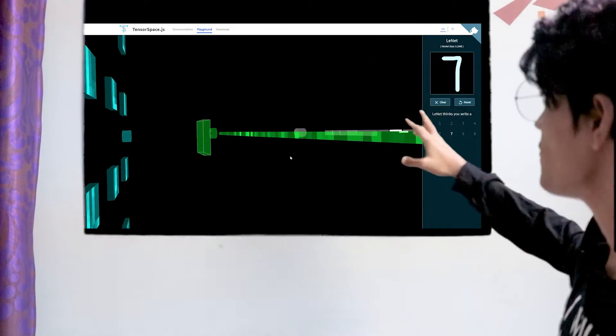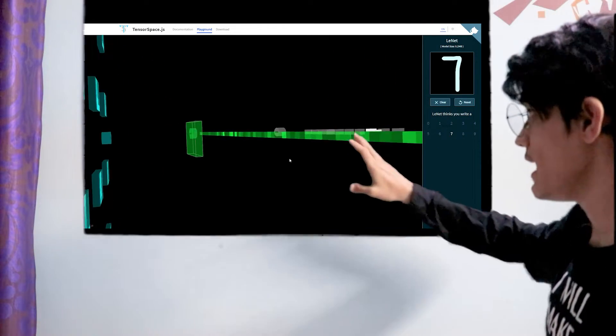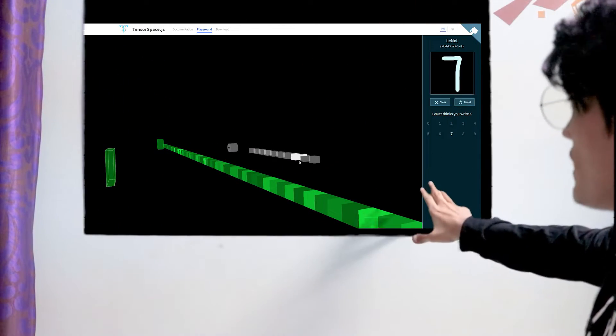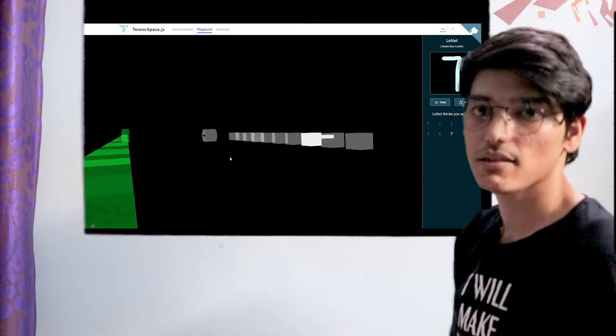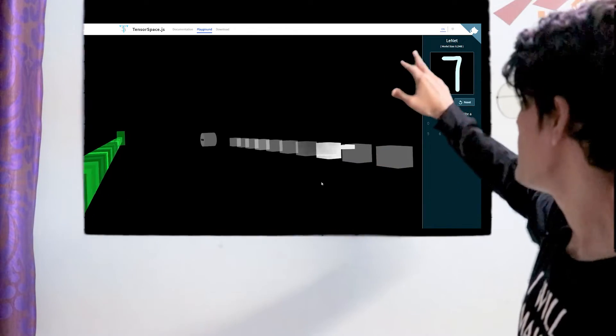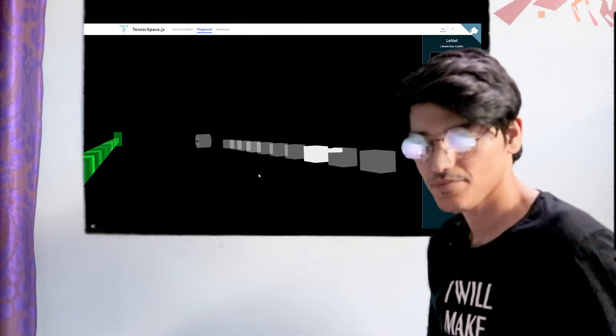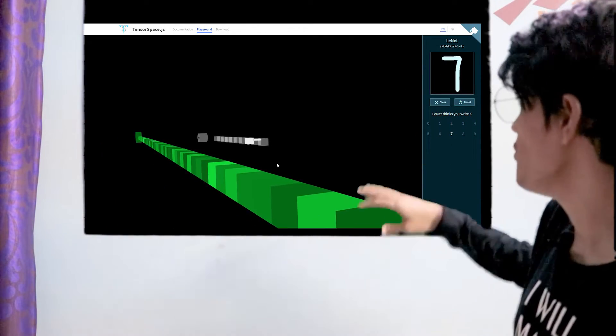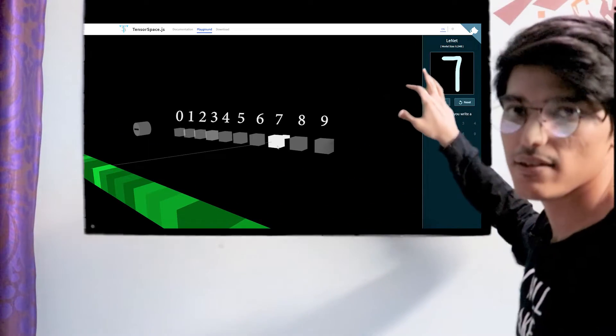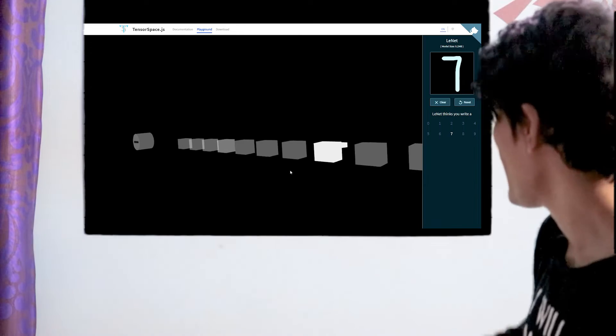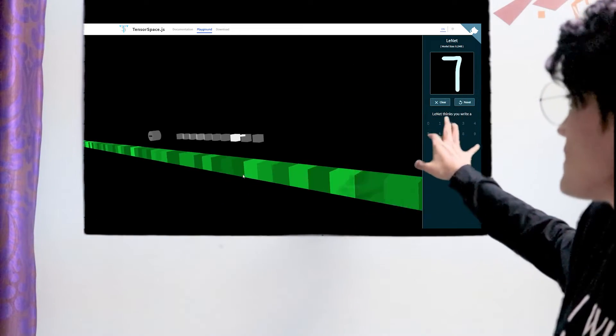Then these are the fully connected layers, and here are the prediction classes containing all possible classes. In our case, numbers from 0 to 9. You can see it clearly selecting number 7 as output, and we see our prediction as 7.